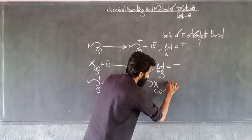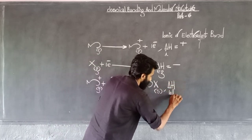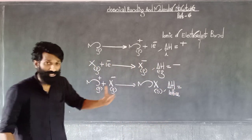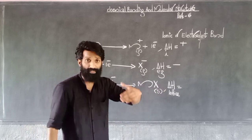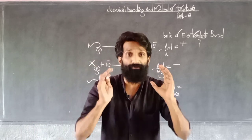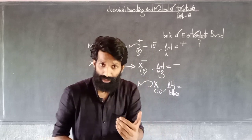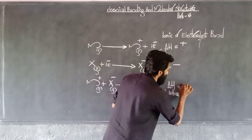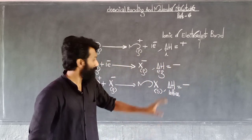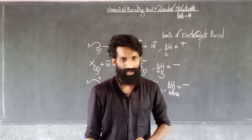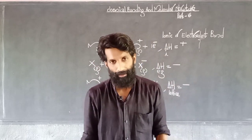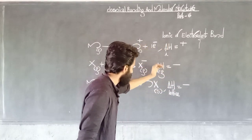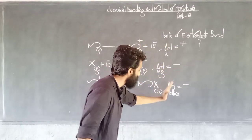This is the Lattice energy. If you have seen this topic — whether the Lattice energy is positive or negative — we have to consider that definition and that process. If a lattice is formed, it is negative. If an ionic bond is formed, it releases energy. There are three energies involved: Ionization energy, Electron Gain energy, and Lattice energy.